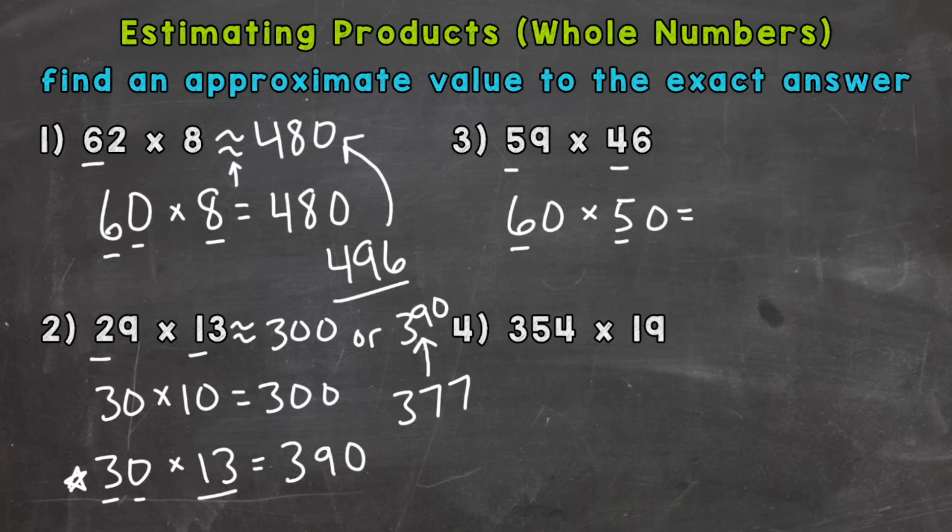So six times five is 30. And we'll place our two zeros back on to give us the correct answer there of 3000. So 59 times 46 is about 3000. The exact answer is 2714. So you can see that our estimate was pretty close to that exact answer.